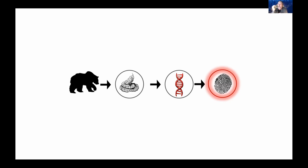We can use this to individually mark animals. Once we find and genotype, for example, a scat or a hair of an animal, we'll be able to recognize this animal in any other sample from the same animal. Genetic data from such samples can then be used for other purposes beyond just individually marking the animals — to make other population-level inferences.